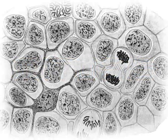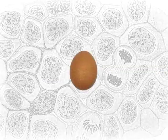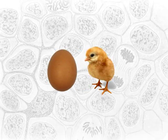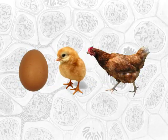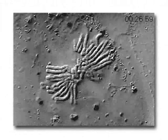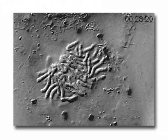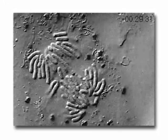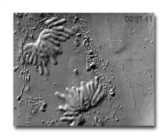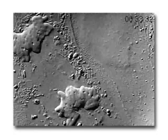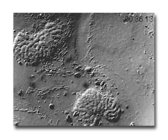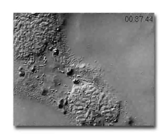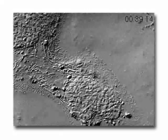Cell division is required for an organism to grow, mature, and maintain tissues. During the mitotic phase, a cell will undergo mitosis to form two new nuclei, and then divide to form two new individual cells during cytokinesis.